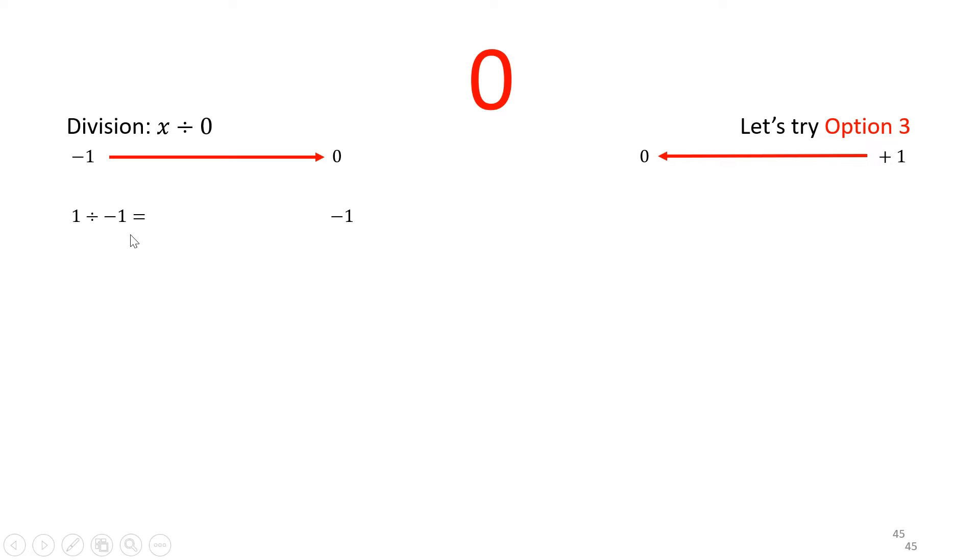So 1 divided by minus 1 is minus 1. 1 divided by minus 0.1, from minus 1 we ended up at minus 0.1, it's very close to 0. It's minus 10. 1 divided by minus 0.01 is minus 100. 1 divided by minus 0.001 is minus 1,000. Wait a minute. 1 divided by minus 10 to the power minus 9 is minus 1 billion.